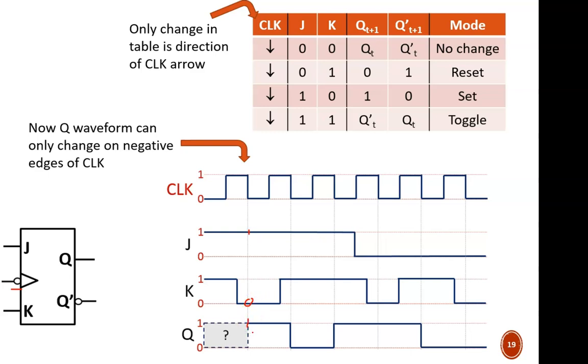At the next negative edge, J equals 1 and K equals 1. This is toggle mode, so Q changes state from a 1 to a 0. It is still toggle mode at the next negative edge, so Q toggles again, this time from a 0 to a 1.